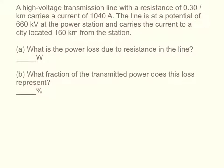A high voltage transmission line with a resistance of 0.3 ohms per kilometer carries a current of 1040 amps. The line is at a potential of 660 kilovolts at the power station and carries the current to a city located 160 kilometers from the station. What is the power loss due to the resistance in the line, and what fraction of the transmitted power does this loss represent?